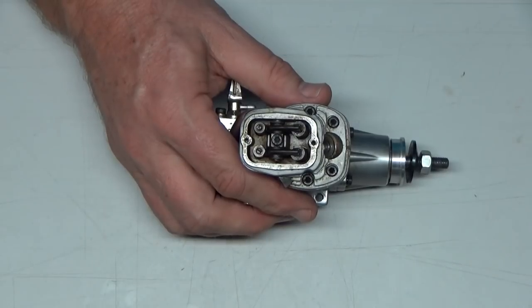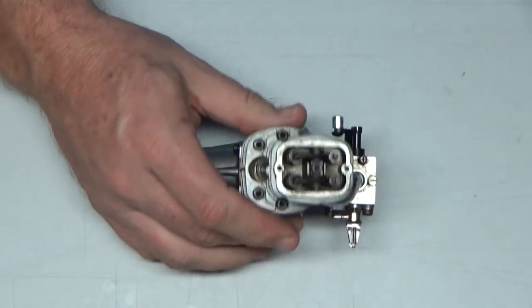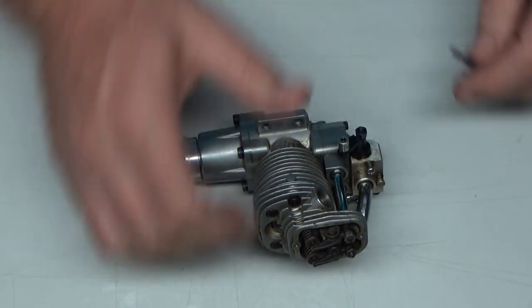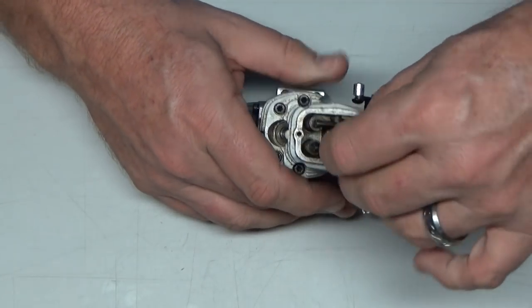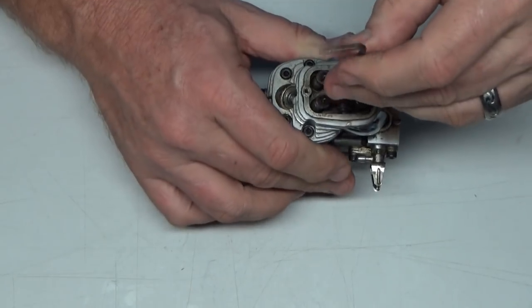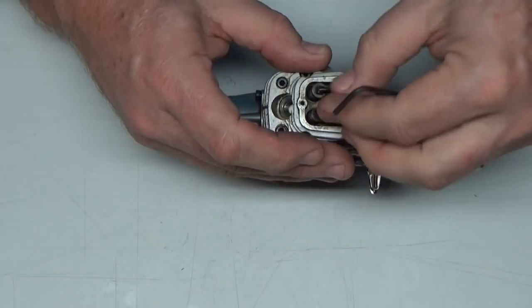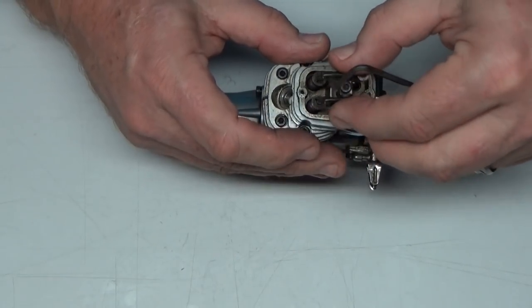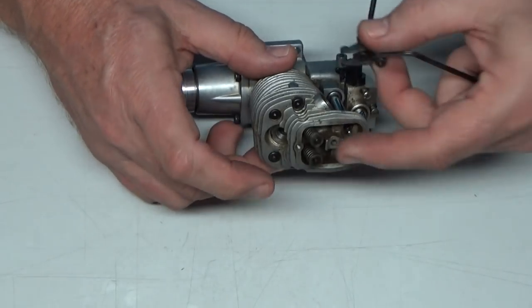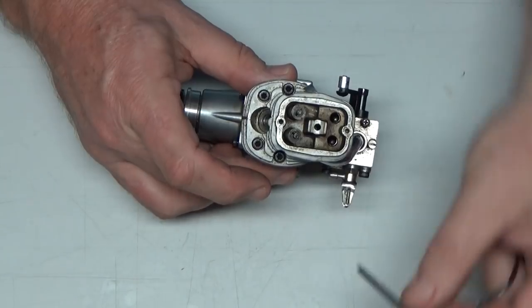So this thing will have better compression probably once the valves are adjusted, but for the sake of this video, let's go ahead and at least remove this head. See if we can try to figure out how much run time this engine has. Or guess anyway. That's one of the things I always like to do. And with these Enya 46 four cycle engines, this screw that holds the rocker arm in place is one of the head screws, that's why it's so long.